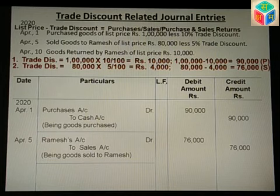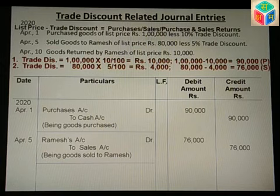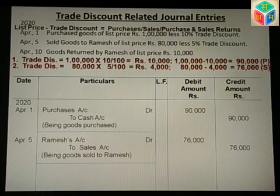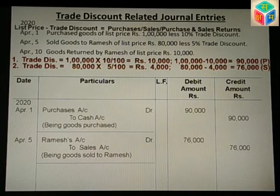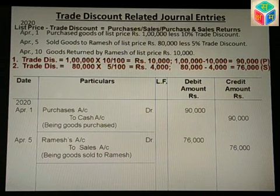Return equation: if goods with a list price of Rs 10,000 with 5% trade discount are returned, the trade discount is automatically deducted from the list price on the return as well. So 5% of Rs 10,000 is still deducted. Even in the return entry, you must enter the list price minus trade discount as the return amount.